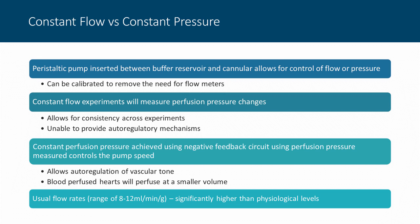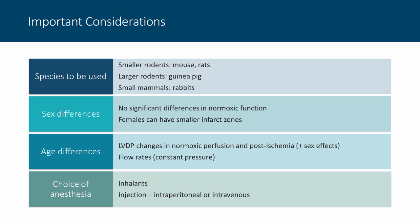Typical flow rates are in the range of 8 to 12 mils per minute per gram of heart weight, which is significantly higher than physiological levels for crystalloid perfusate. For mouse: a lower limit of 1.5 to 2 mils per minute and upper limit of around 6 mils per minute. For rat: lower limit around 10 mils per minute and upper limit of 26 to 28 mils. For rabbits: lower limit of 35 mils per minute and upper limit of up to 80 mils per minute.